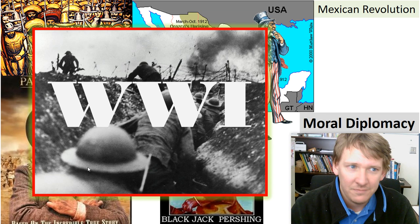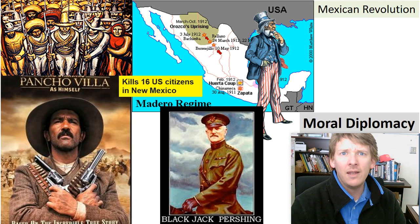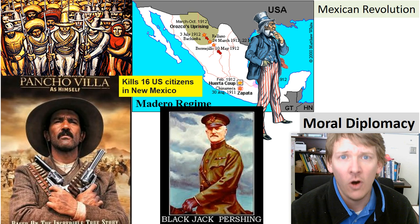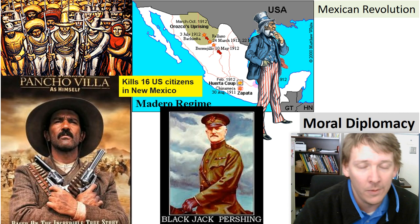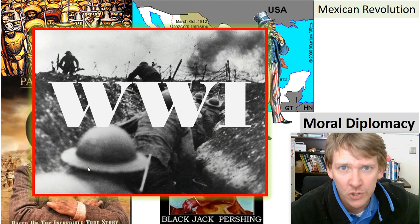As Pershing was getting close to Pancho Villa, World War I broke out and we had to call him back — so Pancho Villa got away. Did we really need to get involved in the first place? Pancho Villa was a dangerous figure, but it's another nation, another country. Every time there's a bad guy in another country, does America have to get involved? Sometimes it seems like that's the rule, and we probably would have hunted him down until the end of time if World War I hadn't happened.